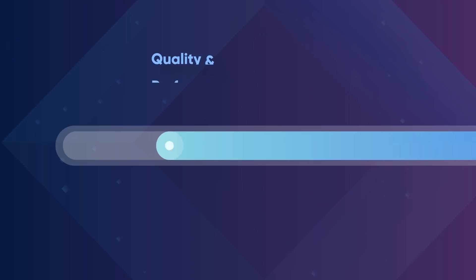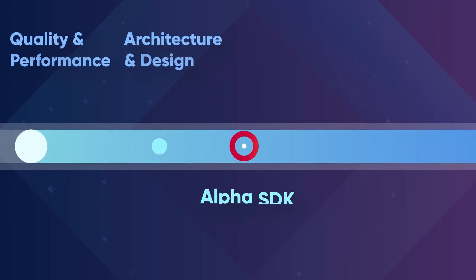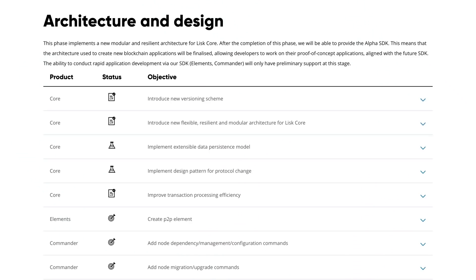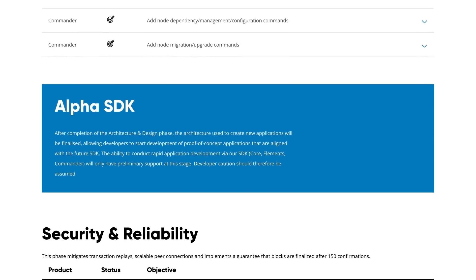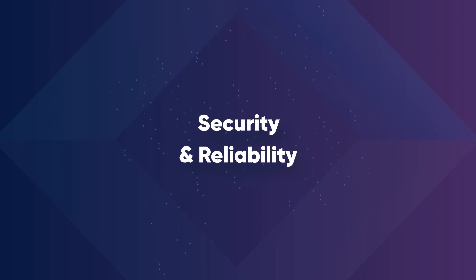Architecture and design implements a new modular and resilient architecture for LISC Core. After this phase is complete, we will be able to provide the alpha SDK. This means the architecture used to create new applications will be finalized, allowing developers to work on their proof-of-concept applications that are aligned with the future SDK.